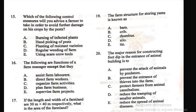Question 15: Which of the following control measures will you advise a farmer to take to avoid further damage on his crops by the pest? A) burning of infected plants, B) hand picking of pests, C) planting of resistant varieties, D) regular weeding of farm, E) using scarecrow tools. The right answer is C — to avoid further damage by pests, advise the farmer to plant resistant varieties.